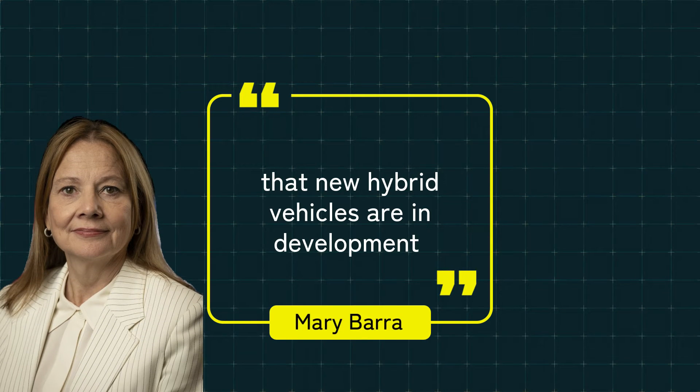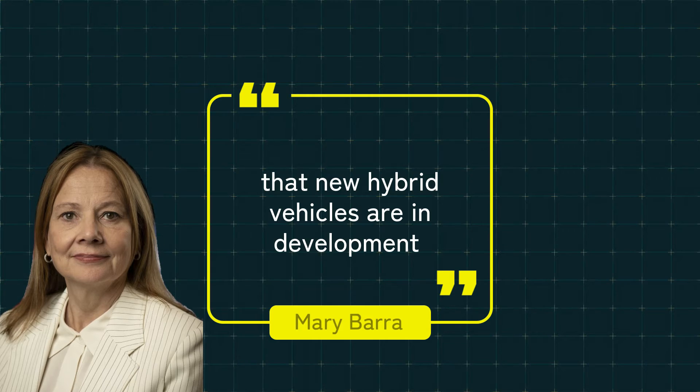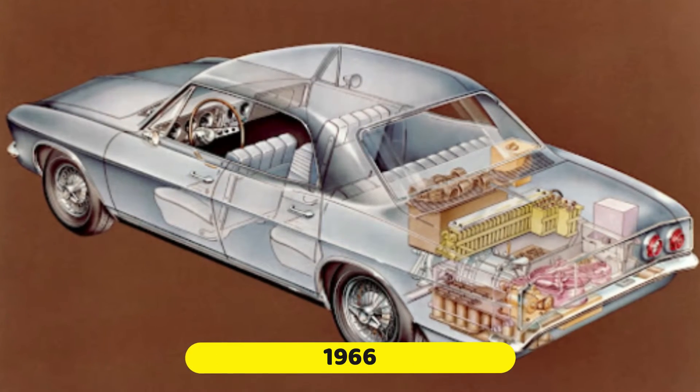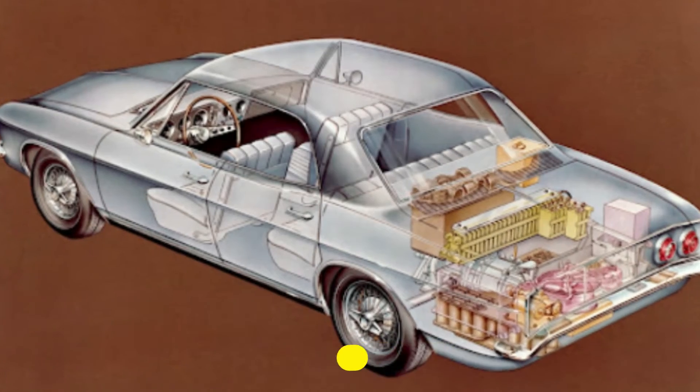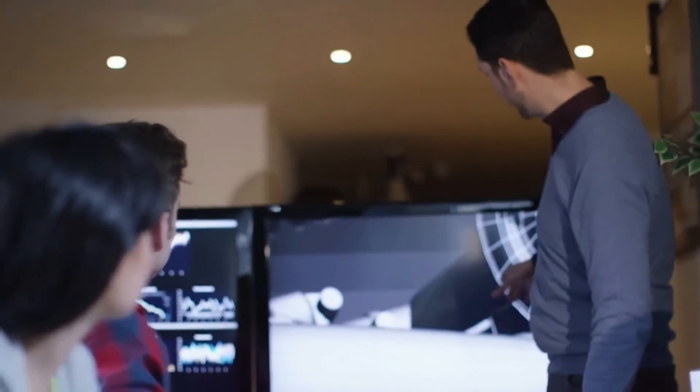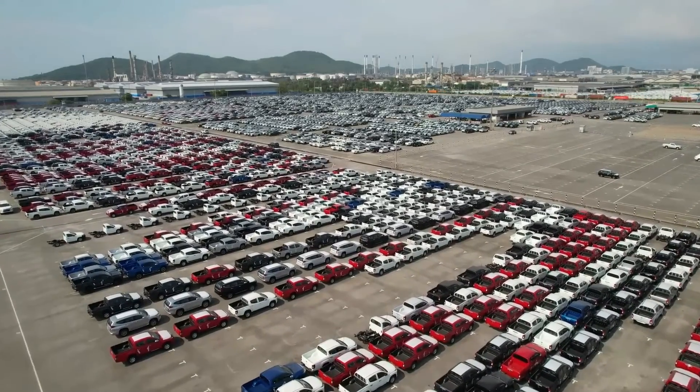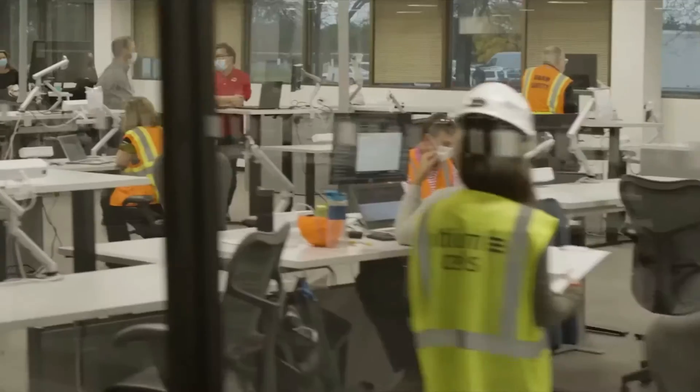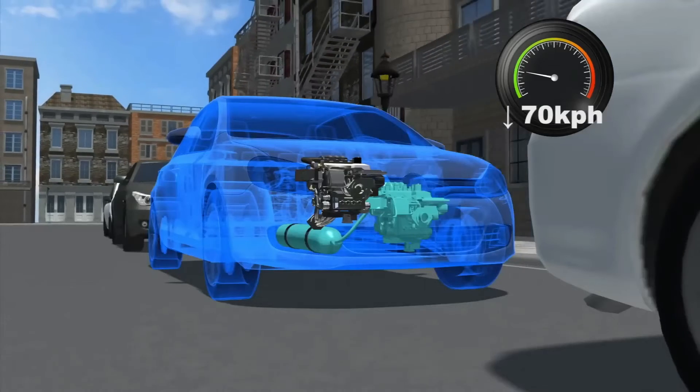Mary Barra already announced that new hybrid vehicles are in development, but the company may have something much better. If you're old enough to remember the 1960s, you probably know about the famous air car that General Motors presented in 1966. That model drew so much attention, but it was still way too early for mass production. Meanwhile, various companies including GM have been working on its perfection, and it looks like that day has almost come.